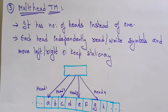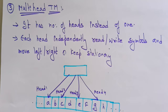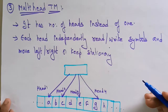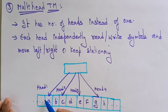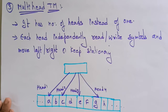Now coming to the third variation of the Turing machine, that is the multi-head Turing machine. The name itself says we are using multiple heads. Instead of using one head from the finite control unit, we can use multiple heads.